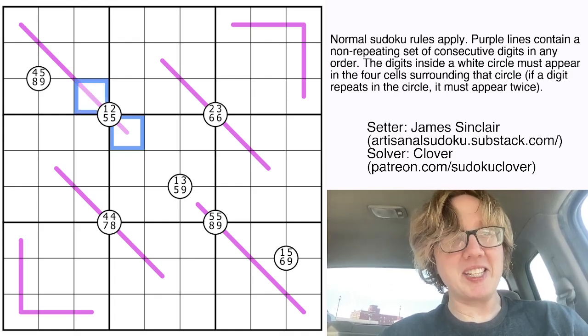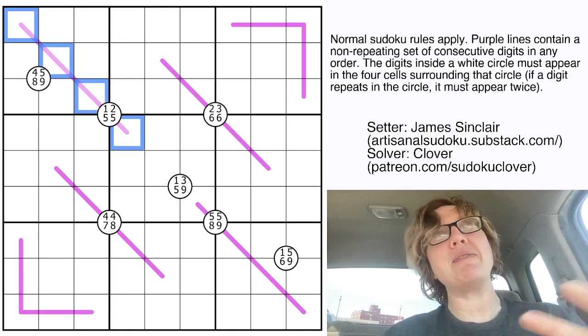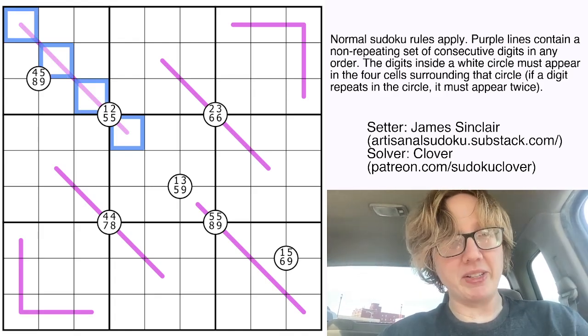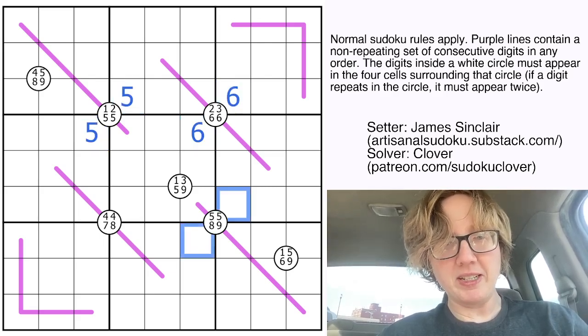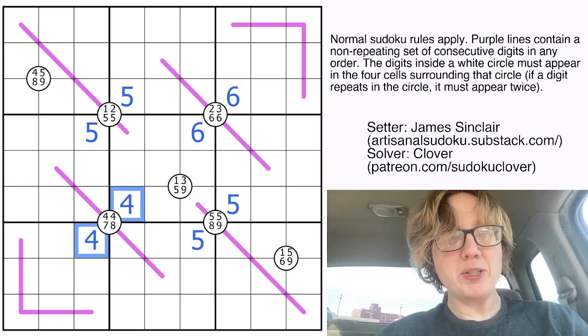which is impossible because that has to be a consecutive set. It has to be like 5, 6, 7, 8, not like 5, 5, 6, 7. So the two fives have to go here. And for the same reason, our two sixes for this quad go there, two fives go there, two fours go there.